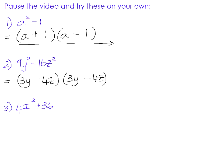Example three: 4x squared plus 36. You need to be very careful here — it looks very much like a difference of two squares problem: 4x squared is a perfect square and 36 is a perfect square. But the problem is that they are being added, and there is no way to find the factors of the sum of two perfect squares. However, there is actually a common factor: 4 goes into both 4 and 36. Taking out 4 gives 4(x squared plus 9). And x squared plus 9 is the sum of two squares, so it cannot be factorized any further — that is your final answer.